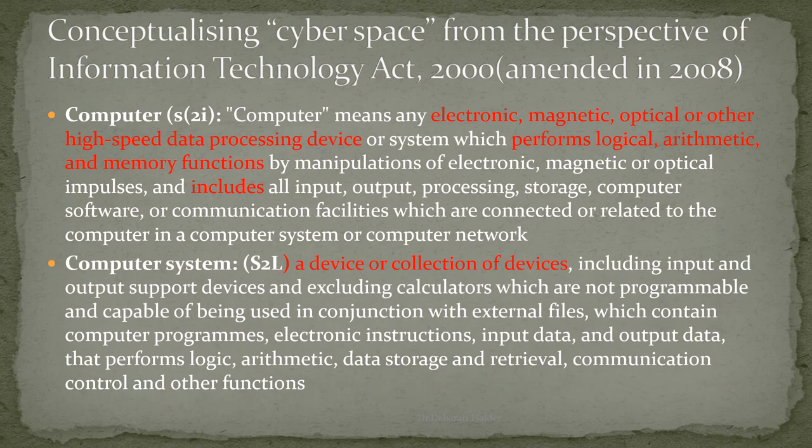We will now understand the definition of computer system under section 2(l). According to this definition, computer system is a device or collection of devices including input and output support devices, excluding calculators which are not programmable, and capable of being used in conjunction with external files which contain computer programs, electronic instructions, input data and output data, that performs logic, arithmetic, data storage and retrieval, communication control and other functions. The difference between section 2(l) and section 2(i) is that section 2(l) defines the computer system and section 2(i) defines the computer.